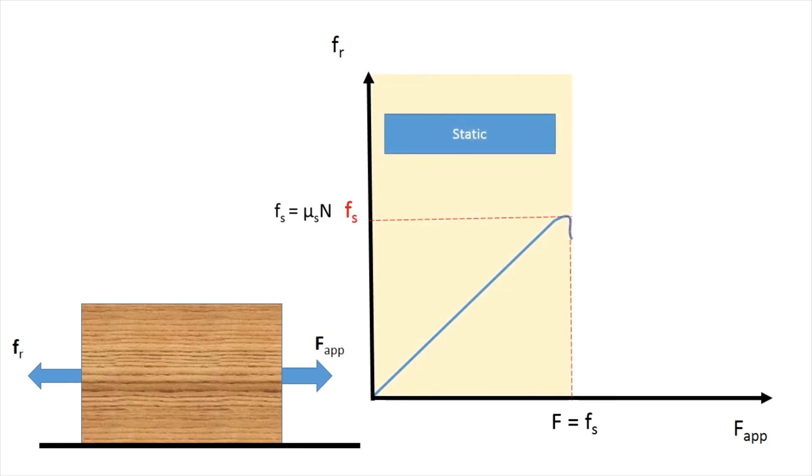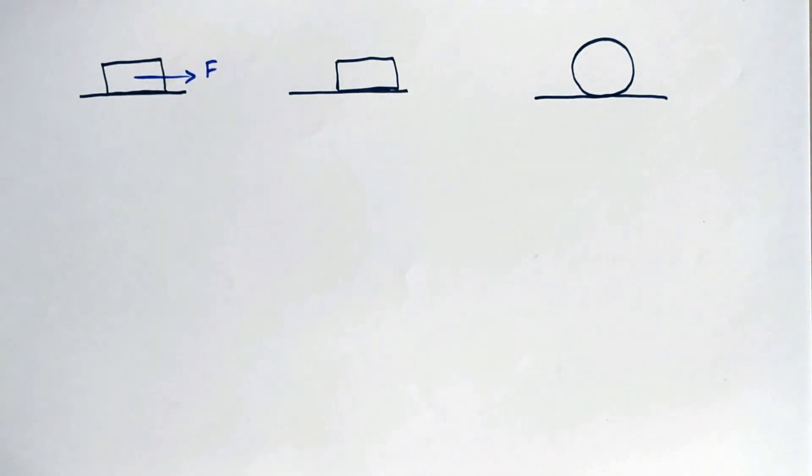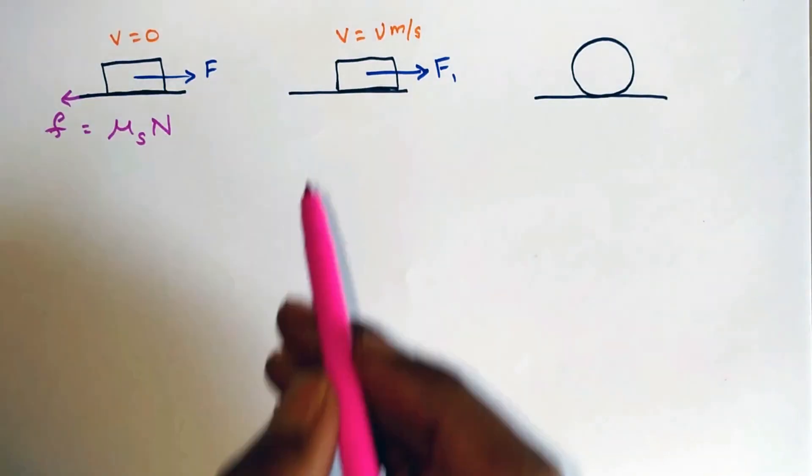Now, if you apply a force more than the static frictional force, it will start to slide. So, you can say that the static friction acts only when the block is stationary. And the kinetic friction acts when the block is moving.